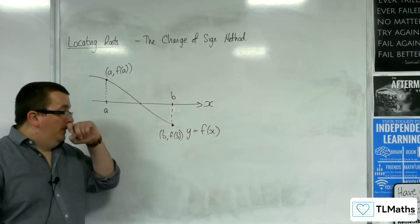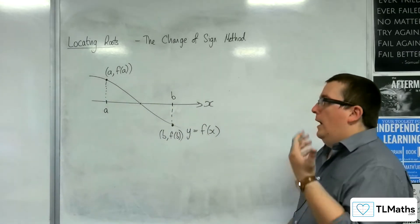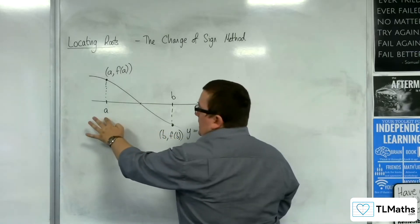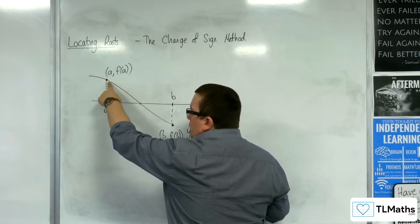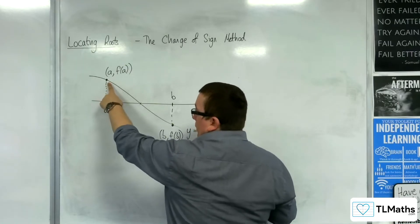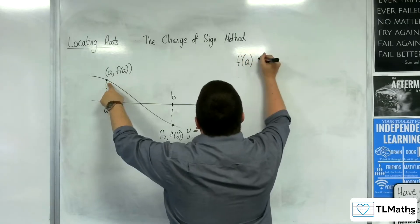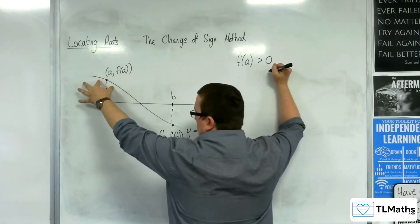So what I'd be saying then is that if I had substituted in the point a into my curve and I'd got a positive value, then I know that the curve is above the x-axis at that point. So if f(a) is positive, then my curve is above the x-axis there.